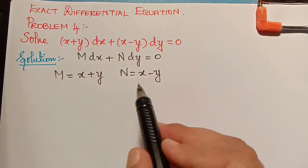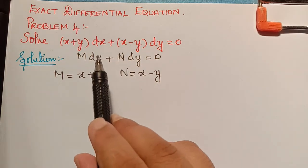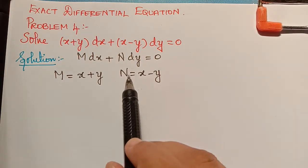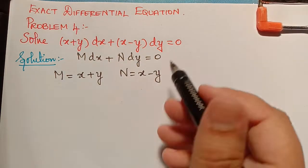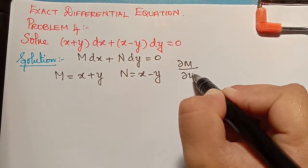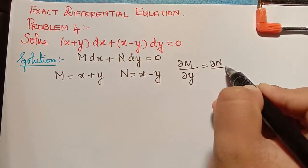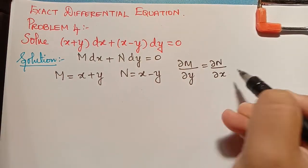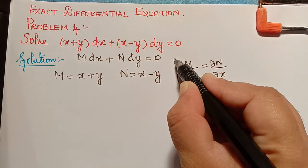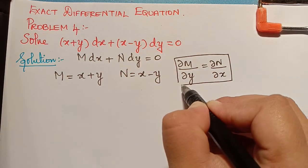First and foremost, we have to check whether the given equation is exact or not. The condition is: if ∂M/∂y equals ∂N/∂x, then the equation is said to be exact.